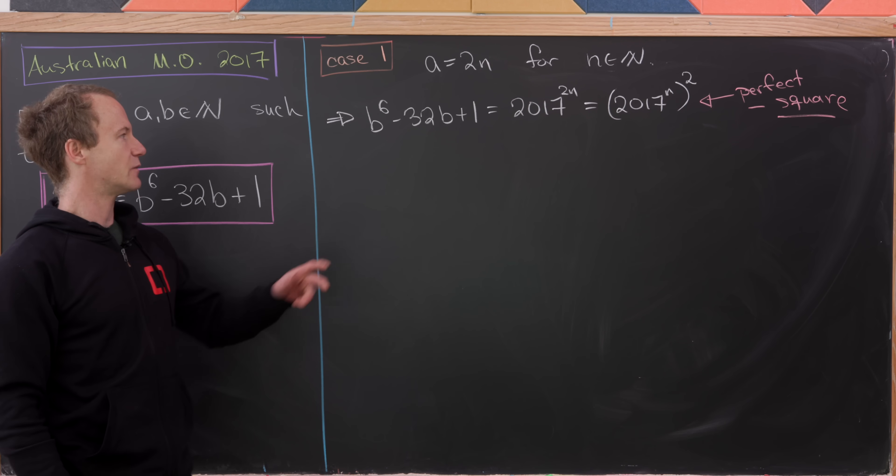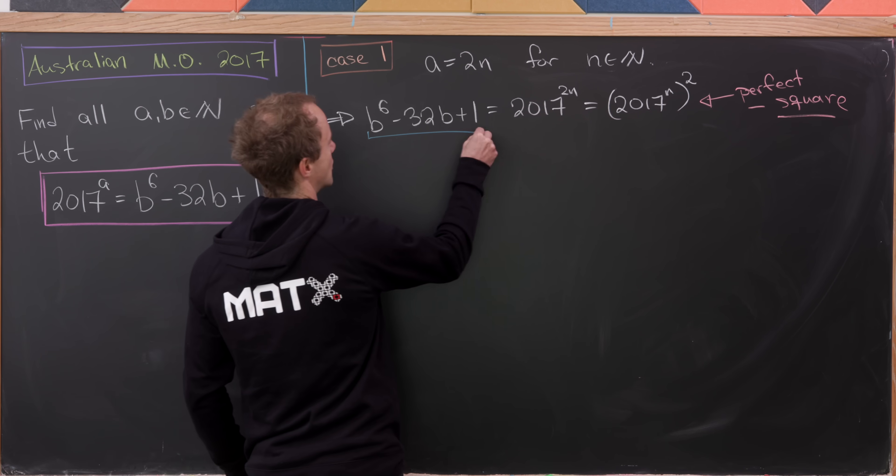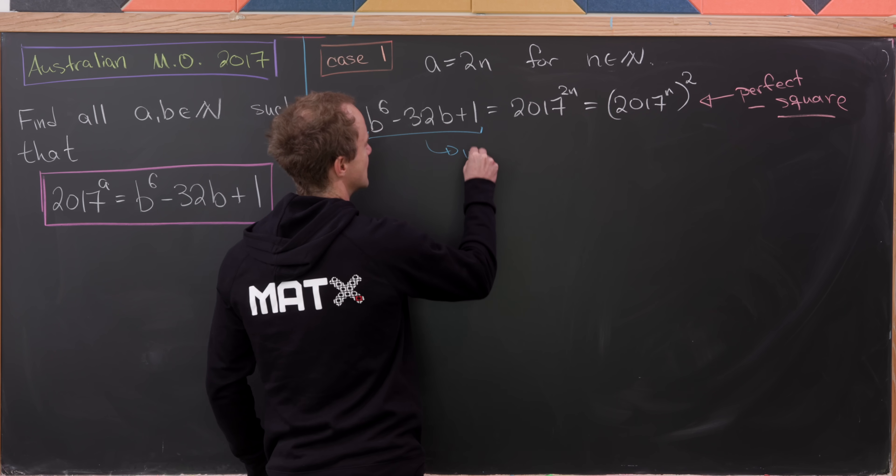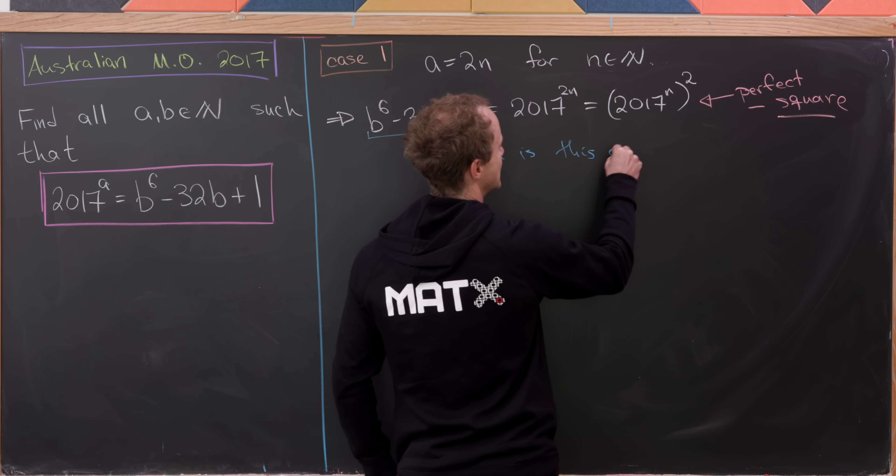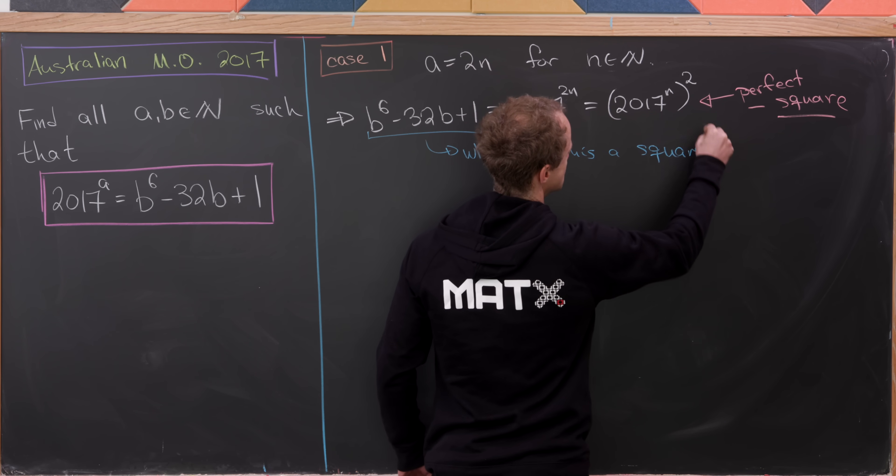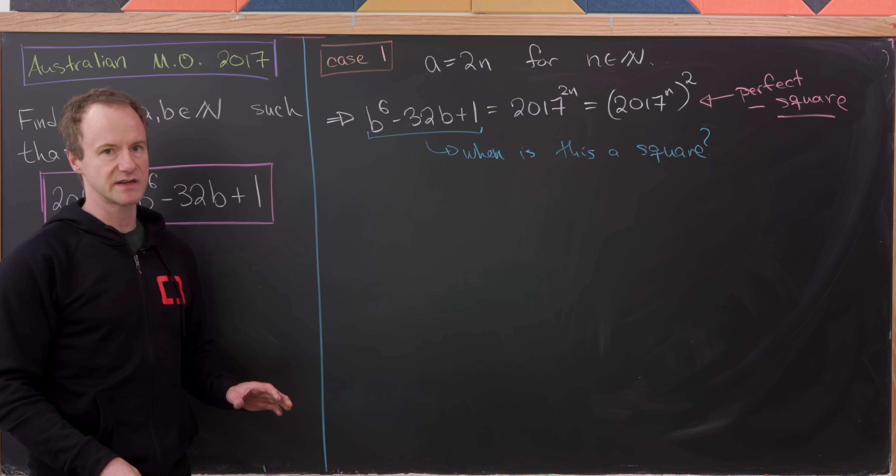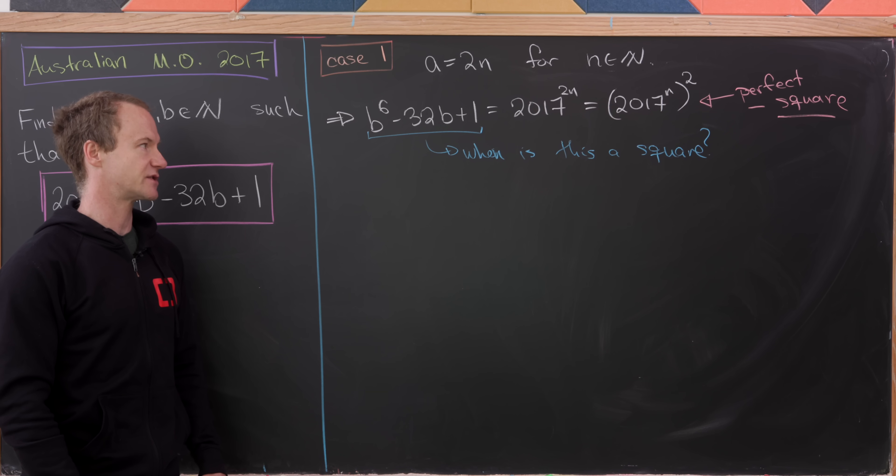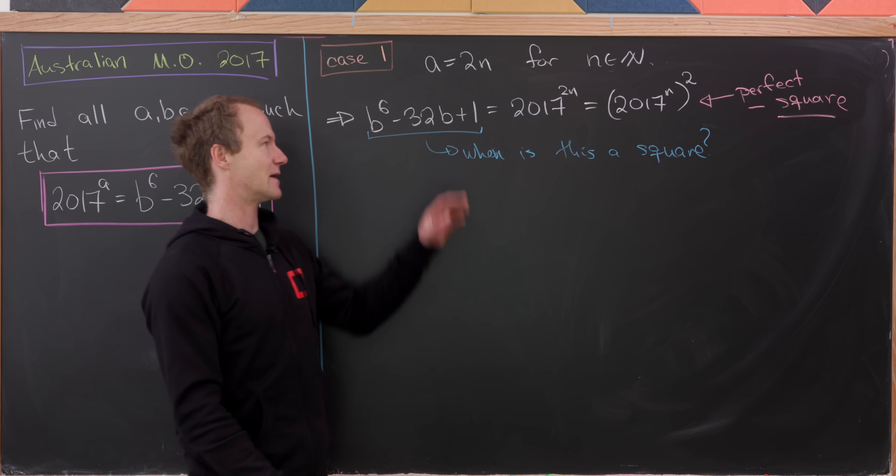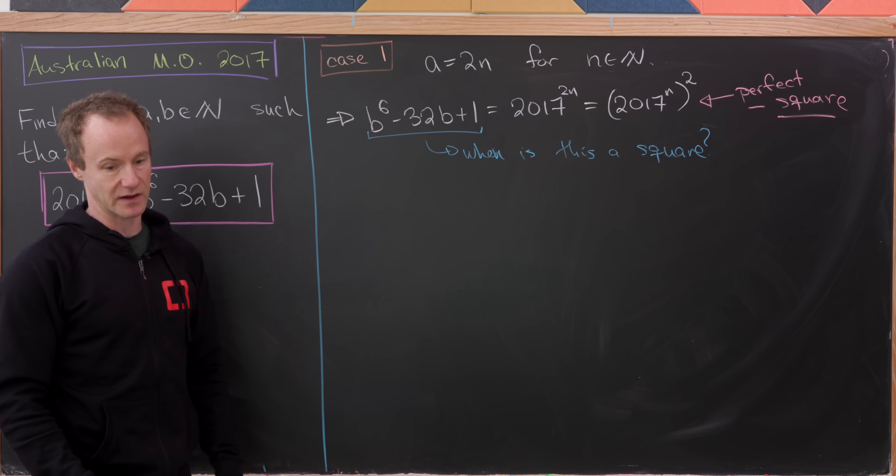We've really changed the problem a little bit. We've said, okay, can we determine when this left-hand side is also a perfect square? So when is this a square? Of course, that doesn't totally solve the problem because a priori there could be lots of places when B^6 minus 32B plus 1 is a perfect square, but it's not a power of 2017. But it at least simplifies everything a little bit.